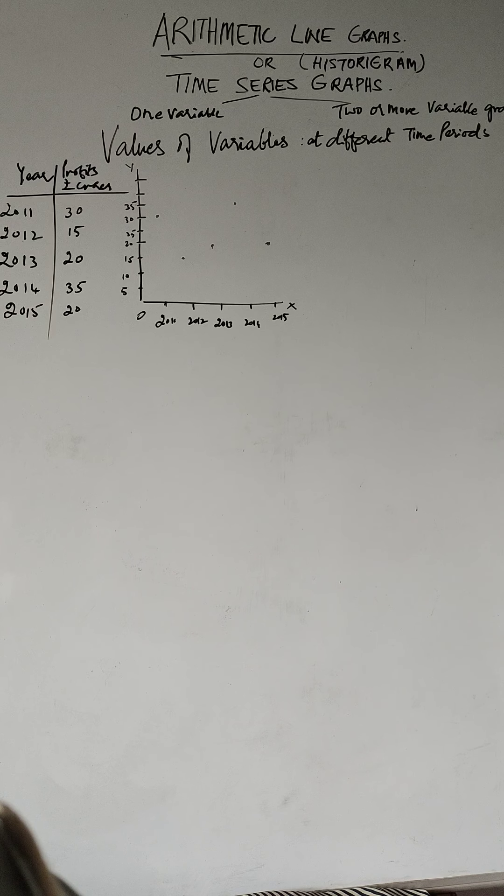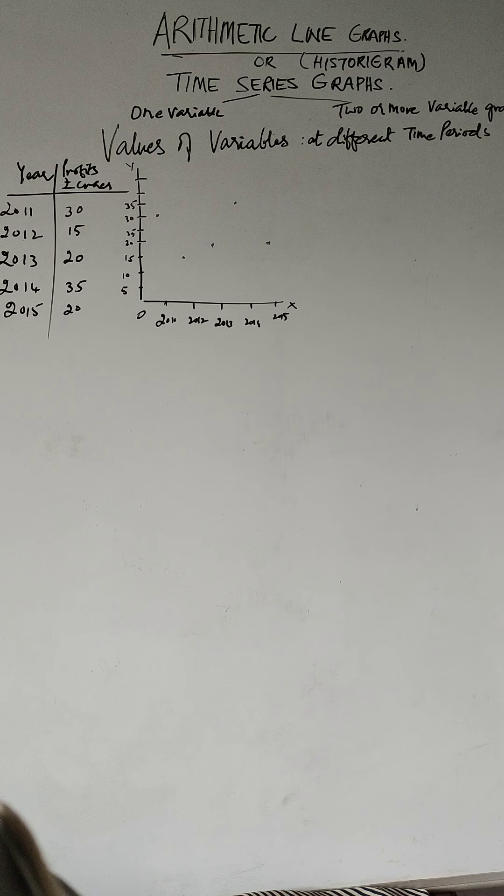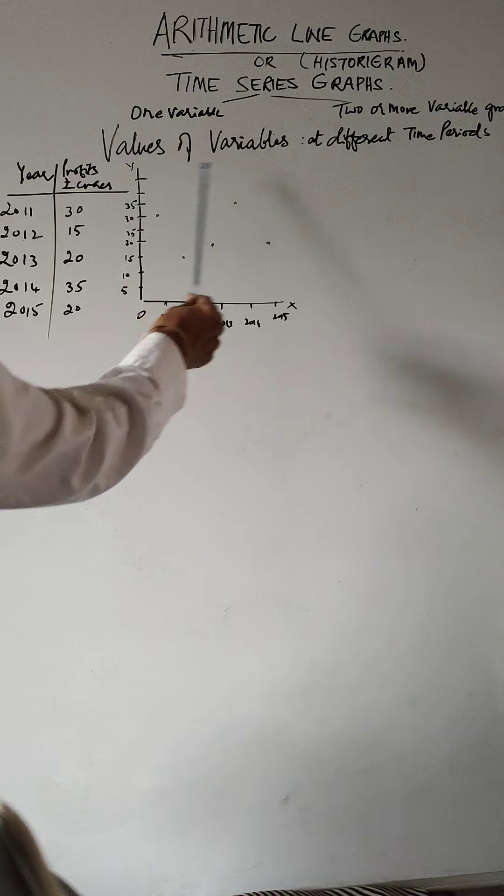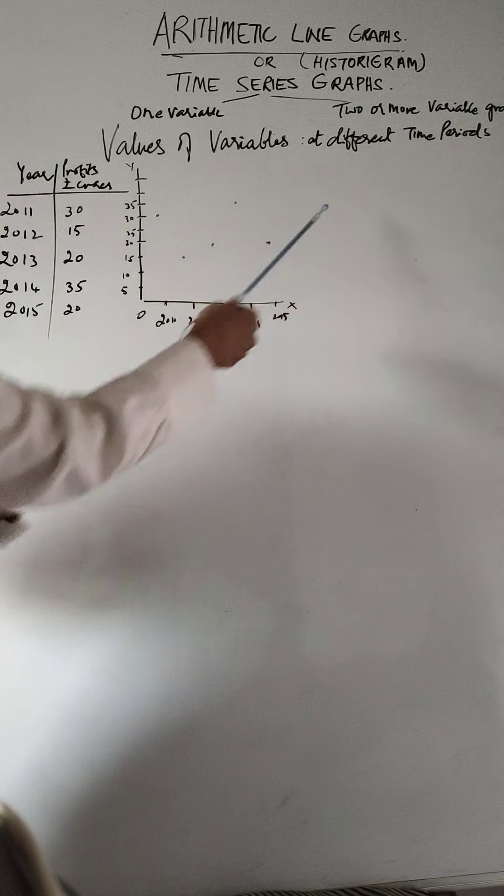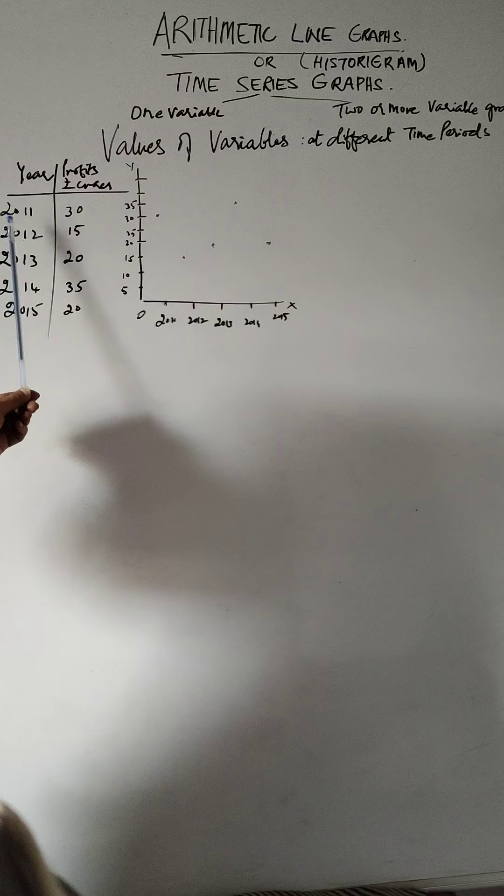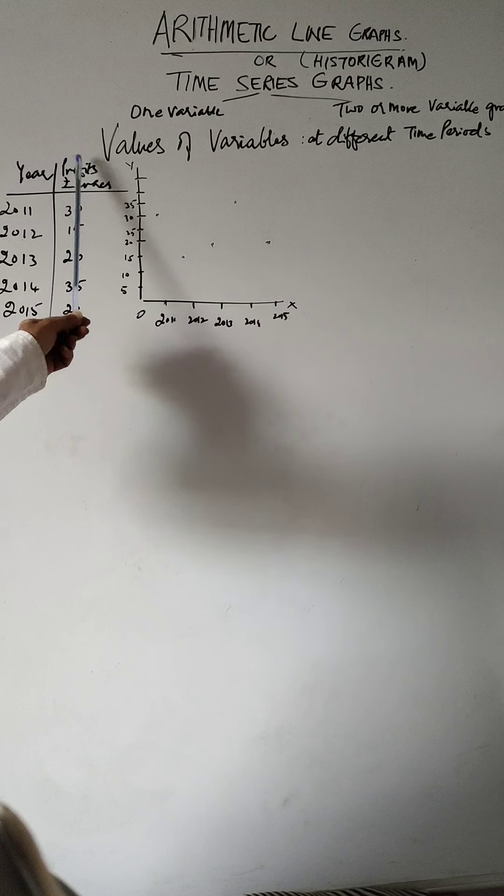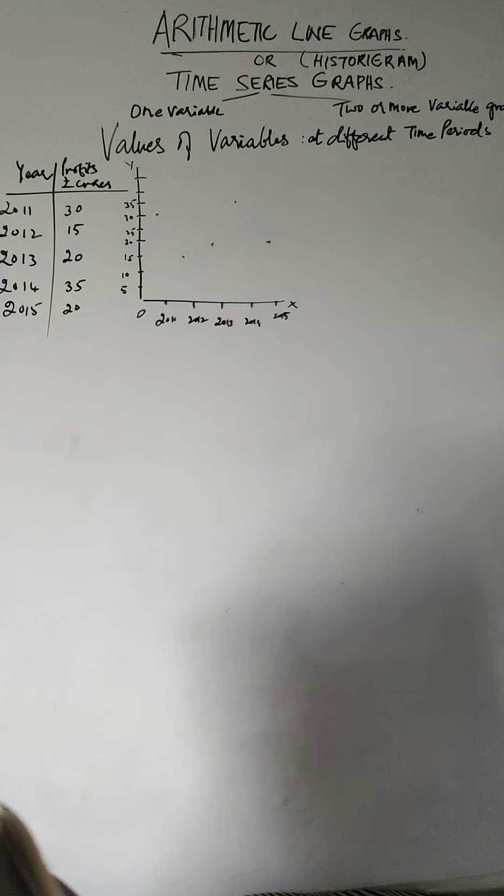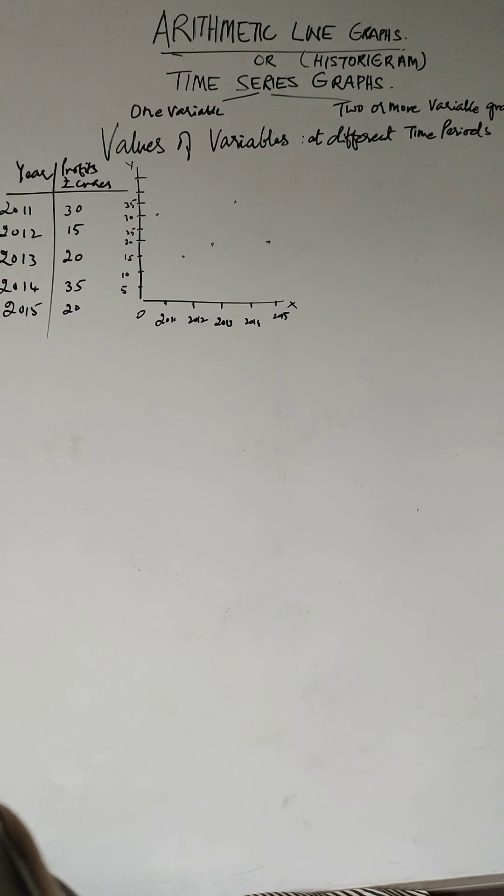If you look at the board now, for example, the values of the variables are at different time periods. The years are given as 2011, 30 profits in rupees crores, 30 crores. The important thing is that...